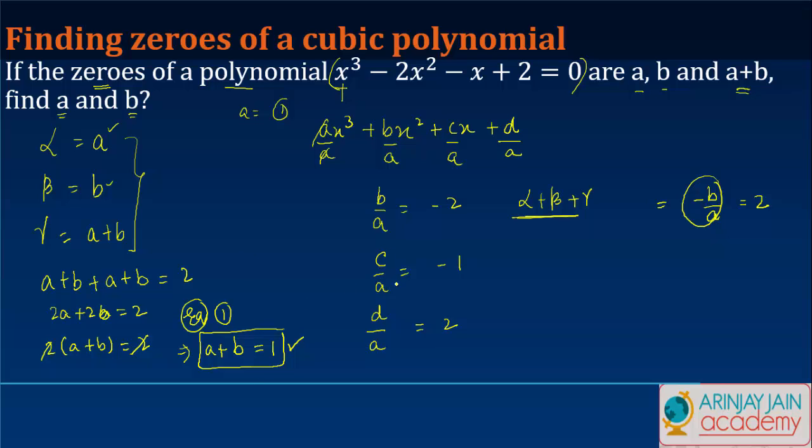Similarly we know that c/a is equal to αβ + βγ + αγ, is equal to -1. So what is αβ over here? ab. ab + b(a+b) + a(a+b) is equal to -1. What I've done is I've just simply replaced these by the values which we had initially kept over here.